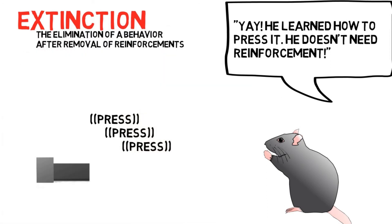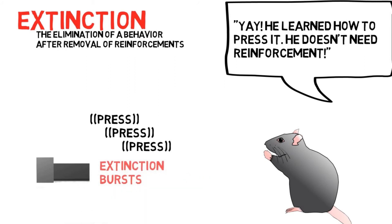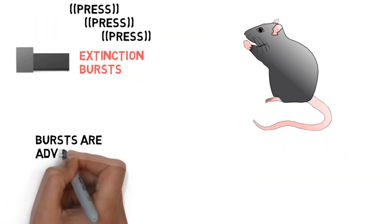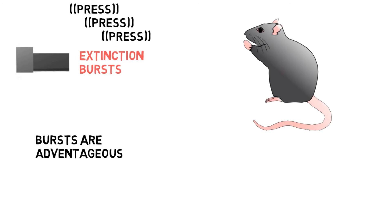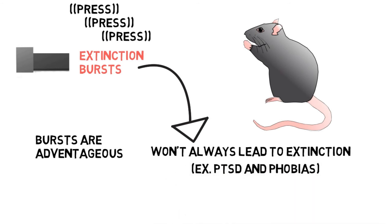You may ask: I stopped reinforcing it yesterday and the mouse had a frenzy pressing the lever — why did it stop now? Well, extinction bursts are those bursts that occur after the behavior stops being reinforced, and they're a pretty common phenomenon. This burst can be explained through evolutionary psychology: in the wild it would be more advantageous for the mouse to be persistent and try again rather than give up easily, because there could still be a chance the behavior could yield reinforcing consequences. However, not every extinction burst will lead to extinction. It's been suggested that those with PTSD and phobias have failed to extinguish behaviors or reactions to situations.